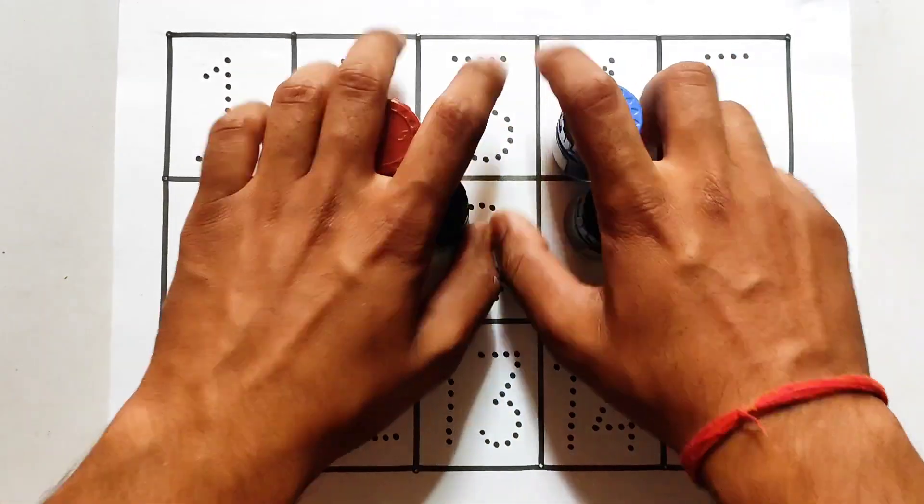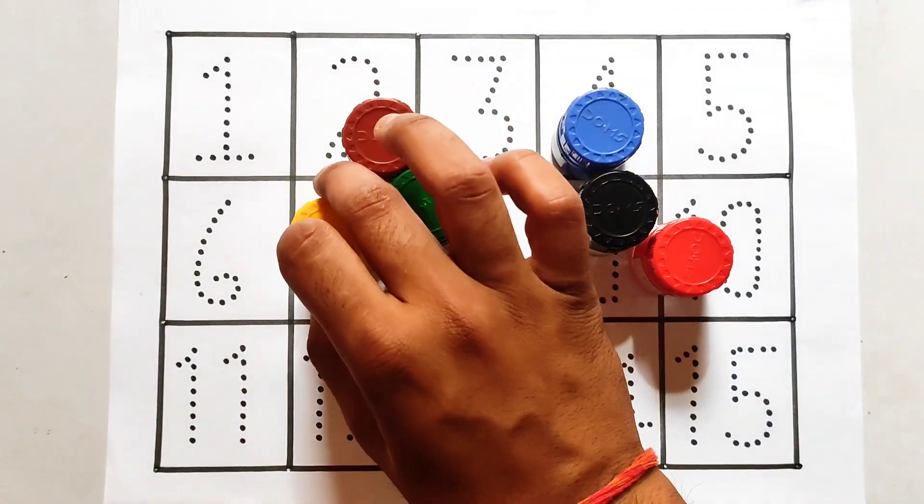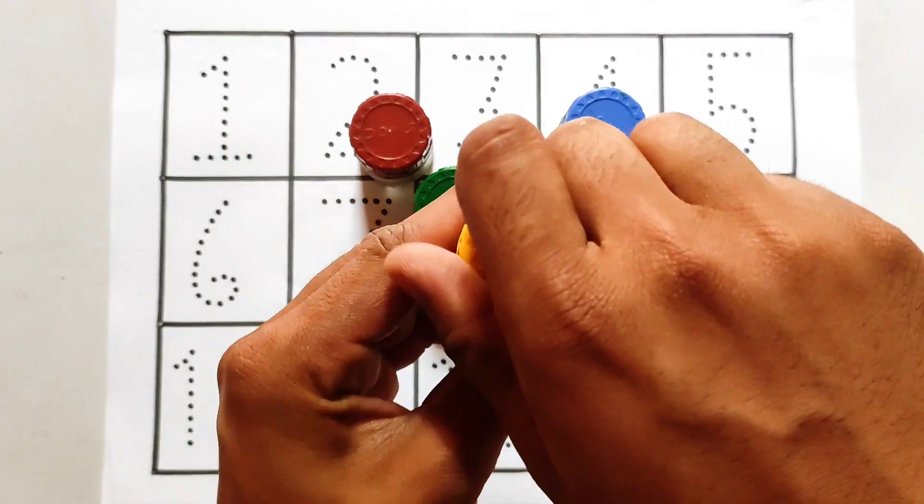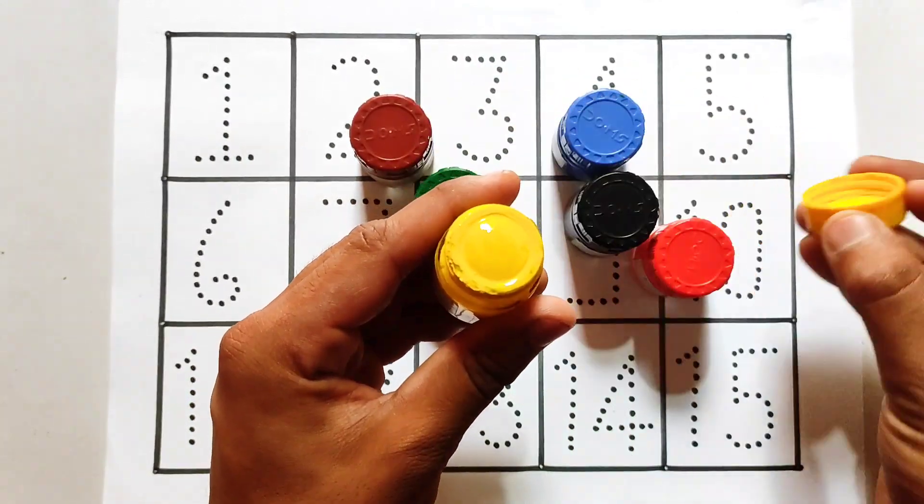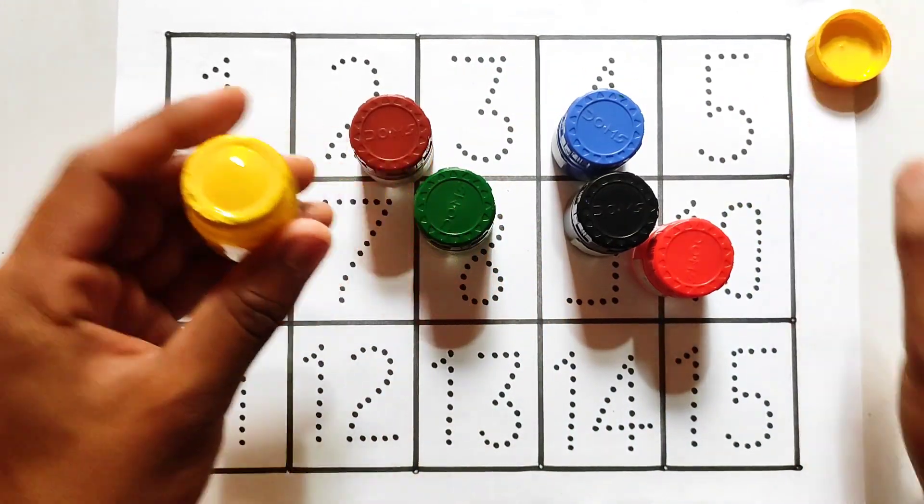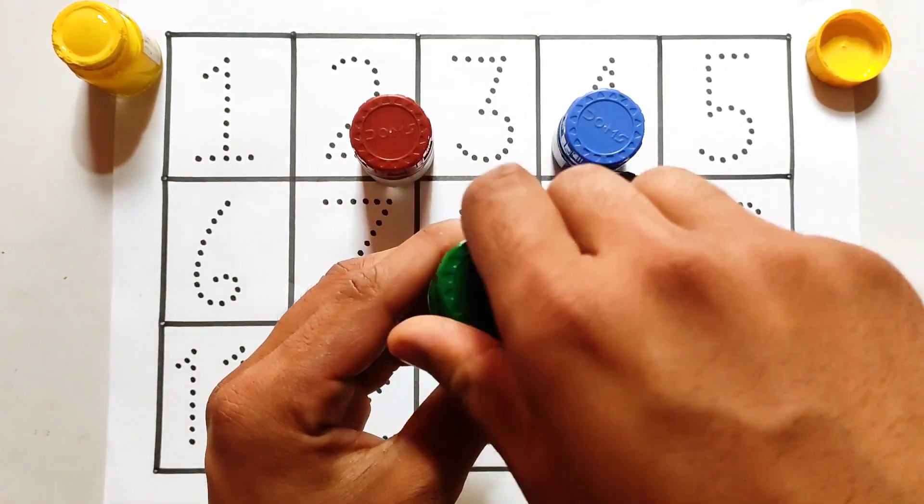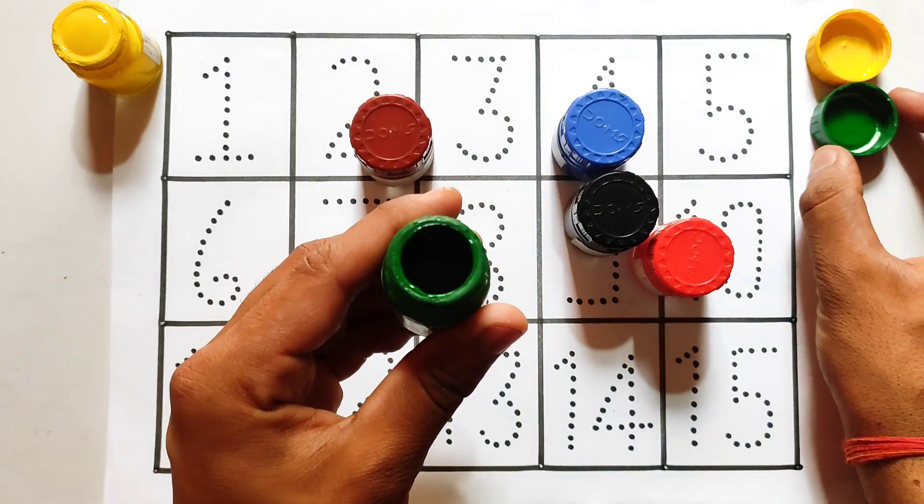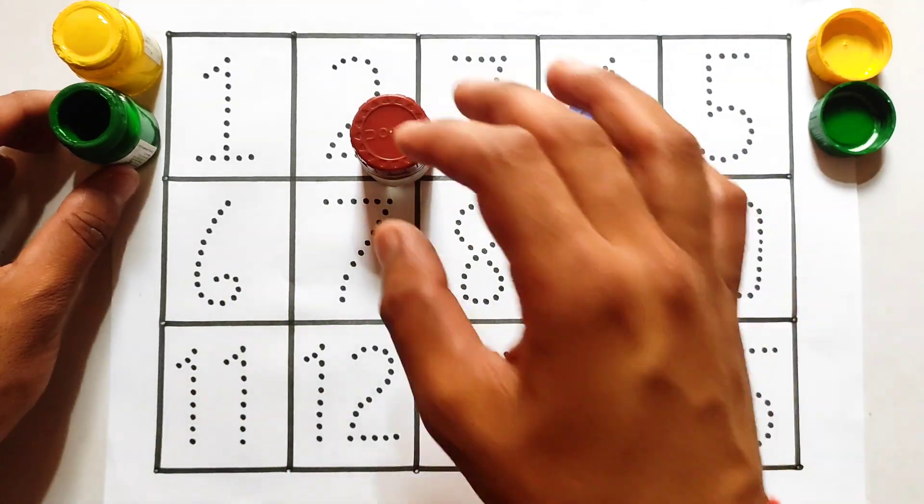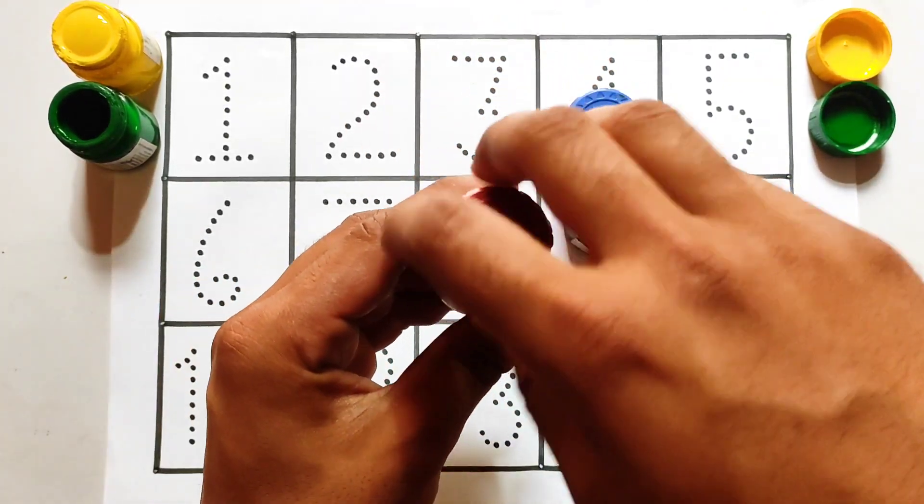And these are the colors. So first of all, be aware about the color's name. This is yellow color. This is green color.